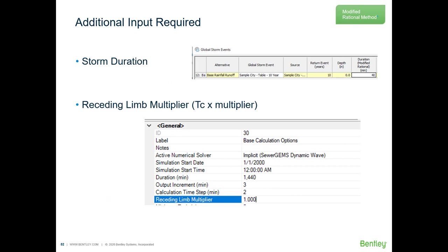For the modified rational method, you input the storm duration in the global storm events and the receding limb multiplier in the calculation options.